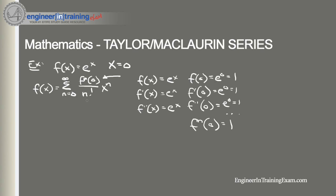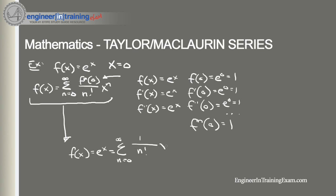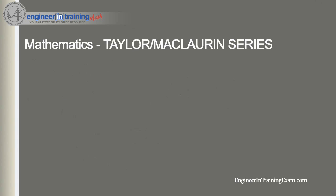Now all we need to do is plug that information into our general formula, and we find that the Maclaurin series of f(x) equals e^x is equal to the sum from n=0 to infinity of 1 divided by n factorial times x to the n. That is our general Maclaurin series representation of the function e^x. Now let's look at a function that isn't about x equals zero.